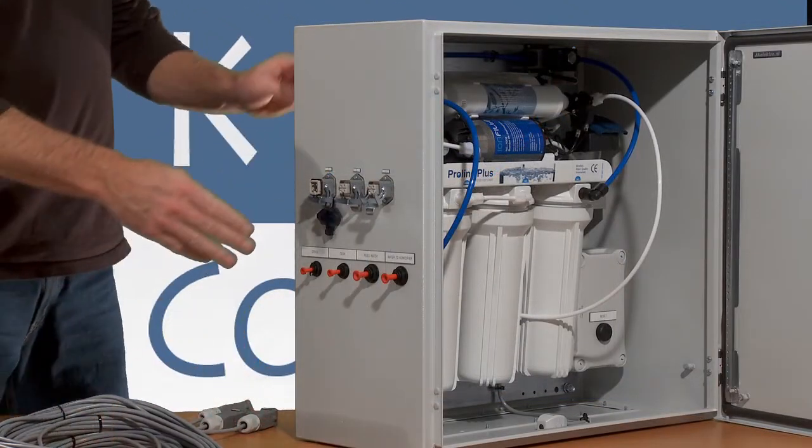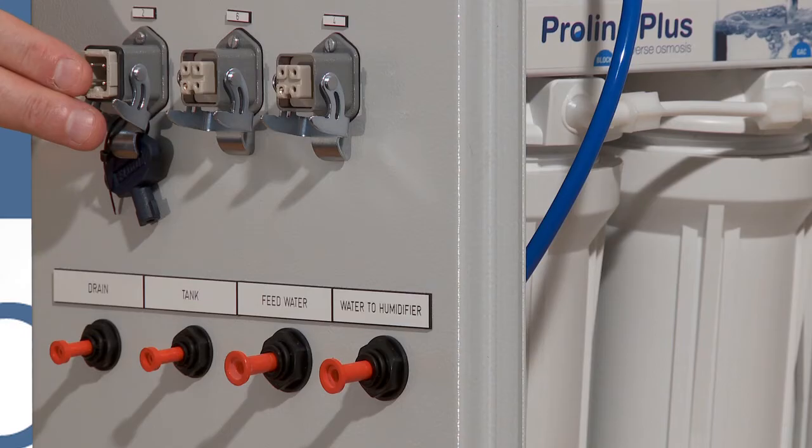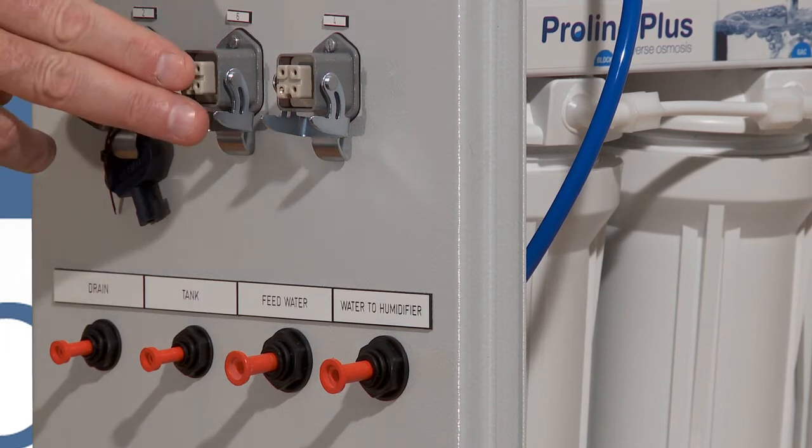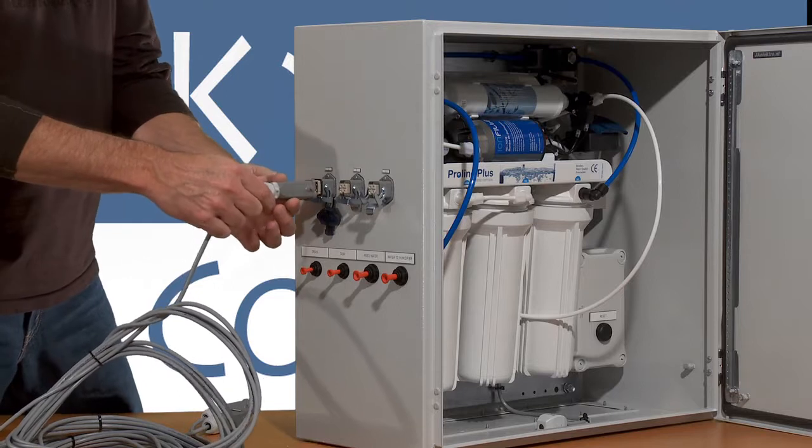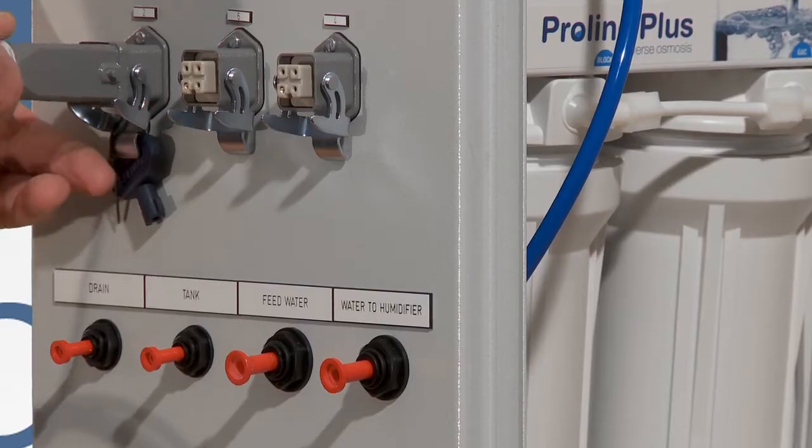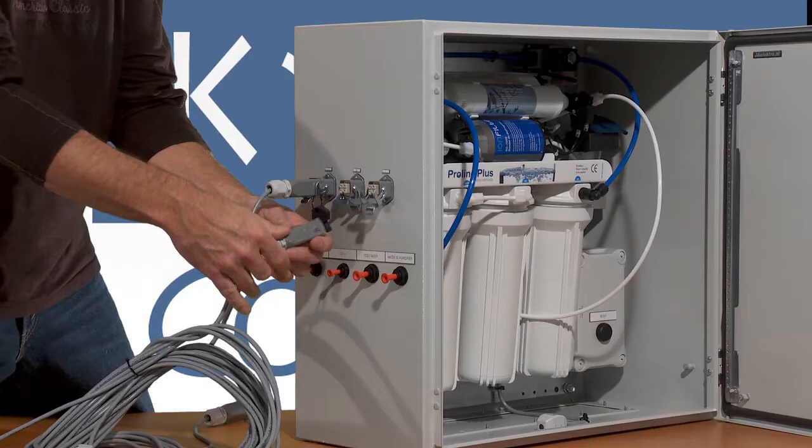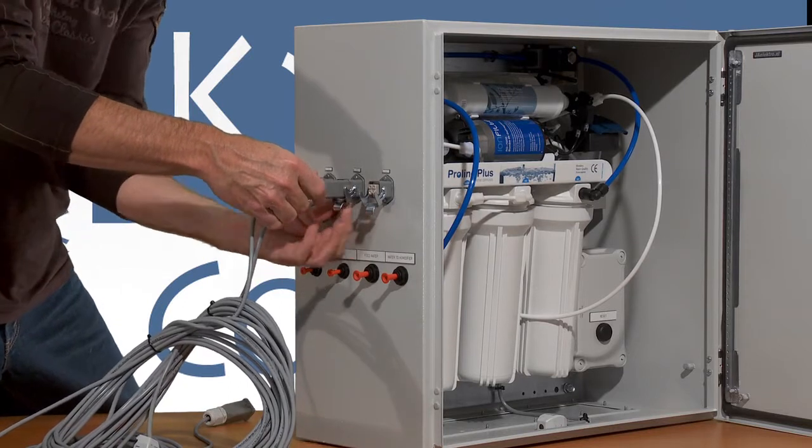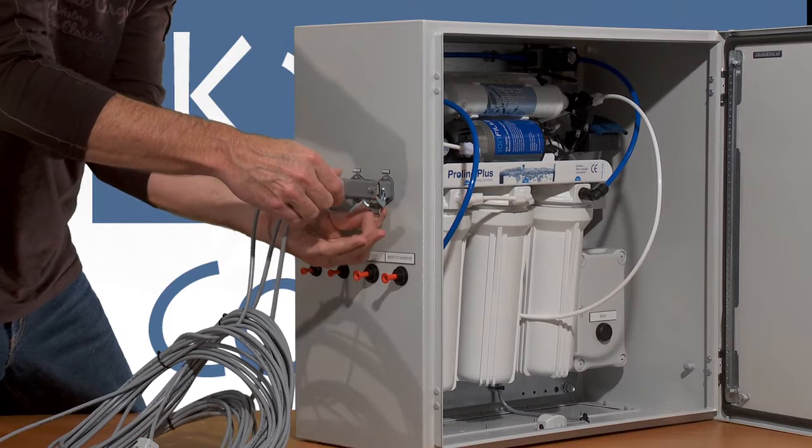Each cabinet comes with three electrical connectors: the power connector, the water detection connector, and the water alarm indicator. Each cable connector is numbered and goes with the corresponding number on the cabinet. The power connector, the water sensor connector, and the water alarm indicator connector.